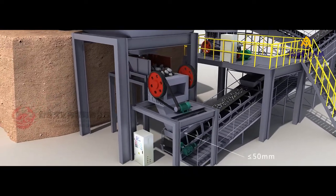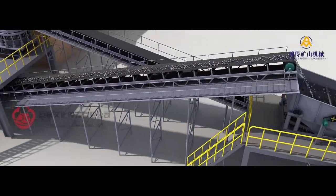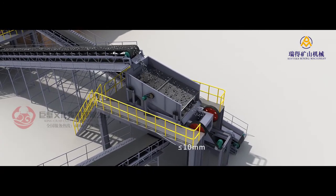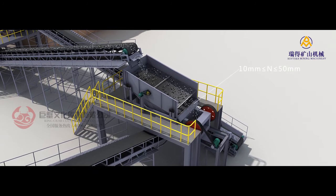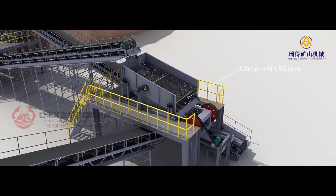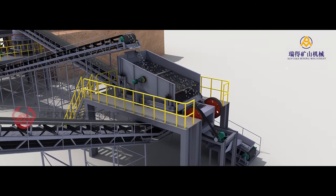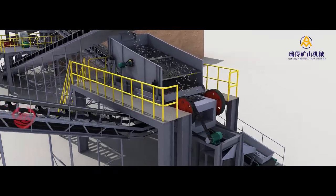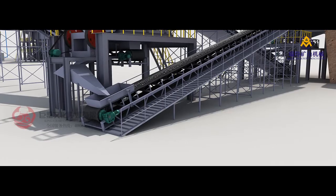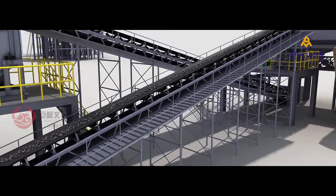The jaw crusher crushes ores to under 50 millimeter. The crushed materials will be transferred to vibrating screen by belt conveyor for separation. Ores under 10 millimeter will go to fine ore bin while oversized ores larger than 10 millimeter will go into two-stage crusher, which crushes ores smaller than 50 millimeter and larger than 10 millimeter. Crushed materials will be fed into cone crusher for crushing and the particle sizes of the product will reach under 10 millimeter.